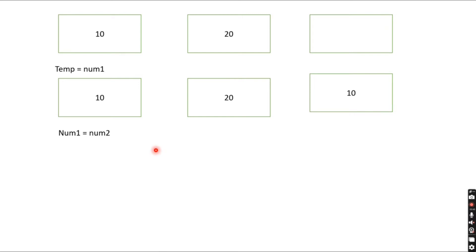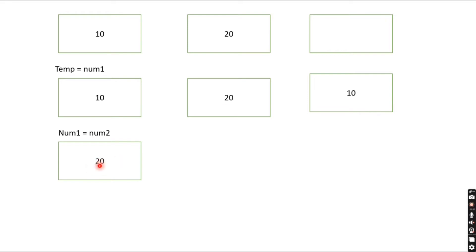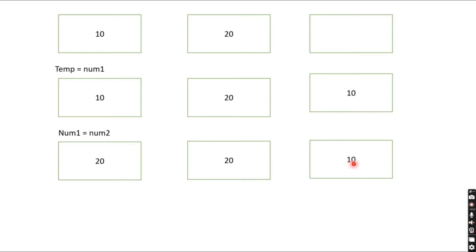The next step is you need to assign the num2 value to num1. So the num1 value will be updated to num2's value. Since num2's value is 20, num1 is updated to 20. Other things remain the same — num2 will be 20 and the temporary variable will be 10.